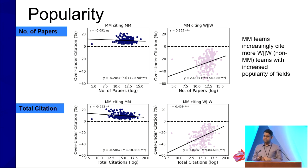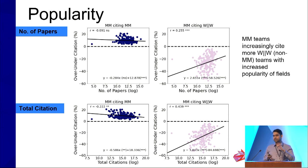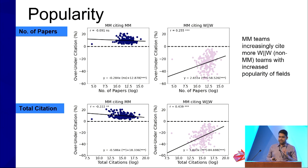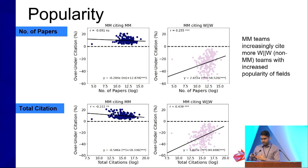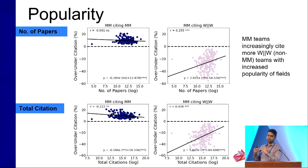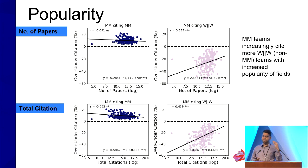For popularity of field, defined by number of papers published and total citations in that field, we see a consistent pattern that MM teams increasingly cite non-MM teams as field popularity grows. So as the field becomes more popular, the under-citation of women becomes more balanced. However, there is still considerable over-citation by MM teams citing MM, so the imbalance doesn't fully disappear.